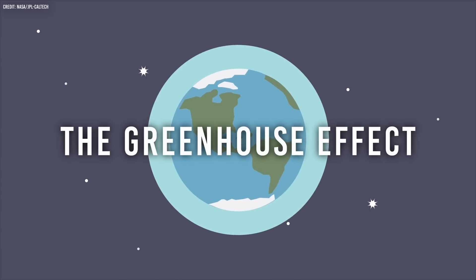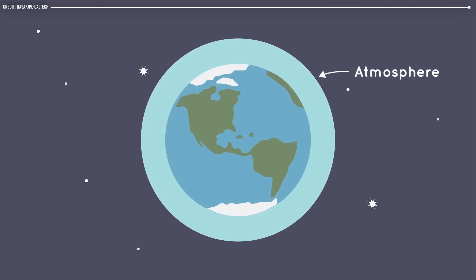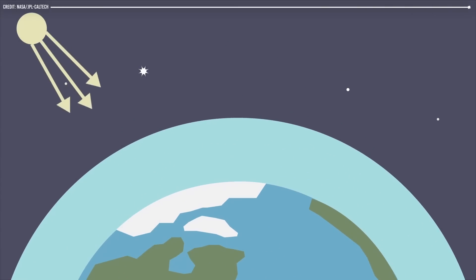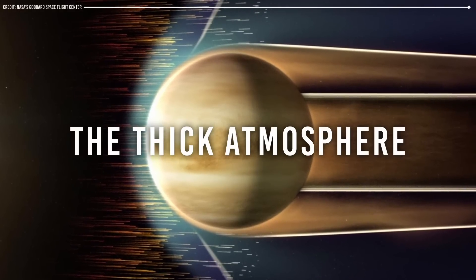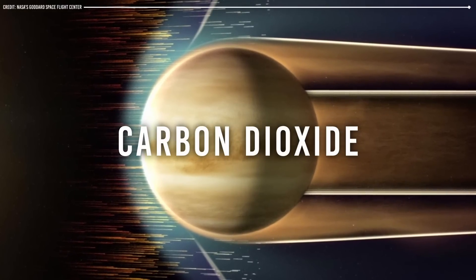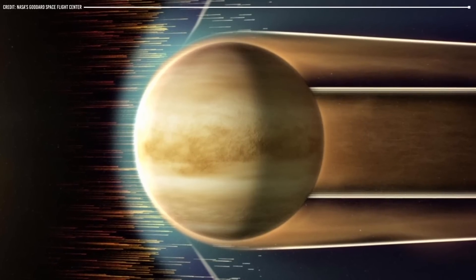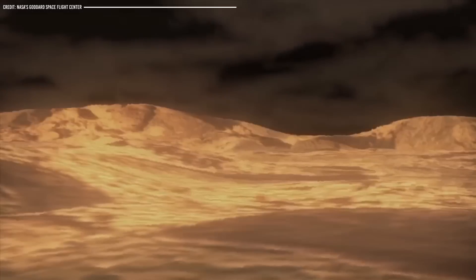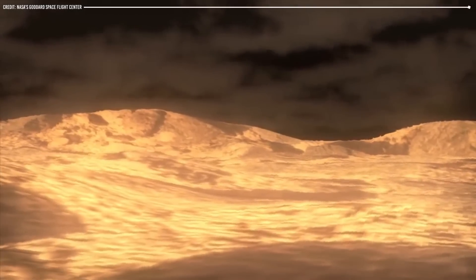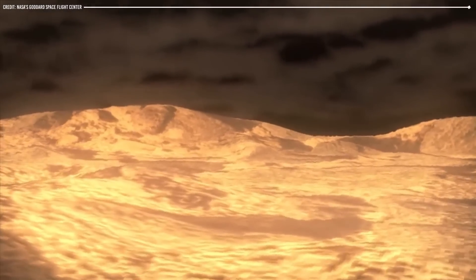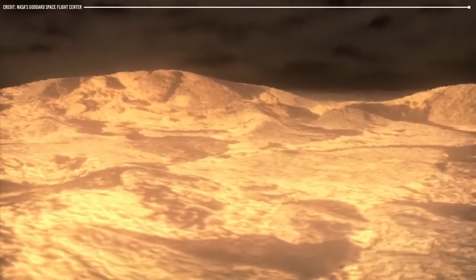The greenhouse effect occurs when gases in a planet's atmosphere trap heat from the Sun, causing the planet's temperature to increase. On Venus, the thick atmosphere, which is composed mostly of carbon dioxide, traps heat and prevents it from escaping back into space. This results in a feedback loop, where the planet's temperature continues to rise, making the greenhouse effect even more intense.